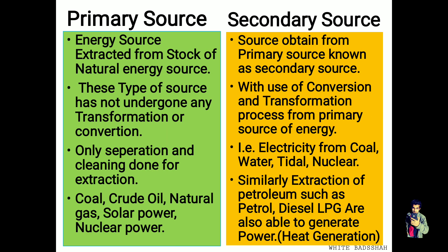What are primary sources of energy? The energy source extracted from the stock of natural energy sources is known as a primary source. For example, coal extracted from the earth's crust is considered a primary source without any kind of transformation. This type of source does not undergo any type of transformation or conversion — it is just extracted from available resources. Only separation and cleaning are done for extraction purposes. Coal, crude oil, natural gas, solar power, and nuclear power are the main examples of primary sources.